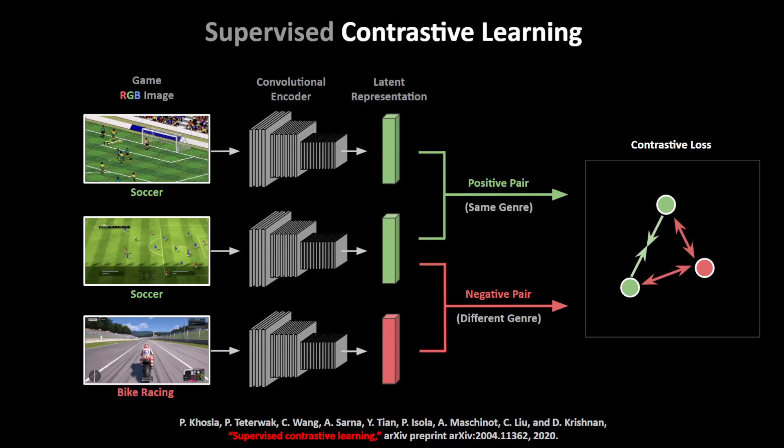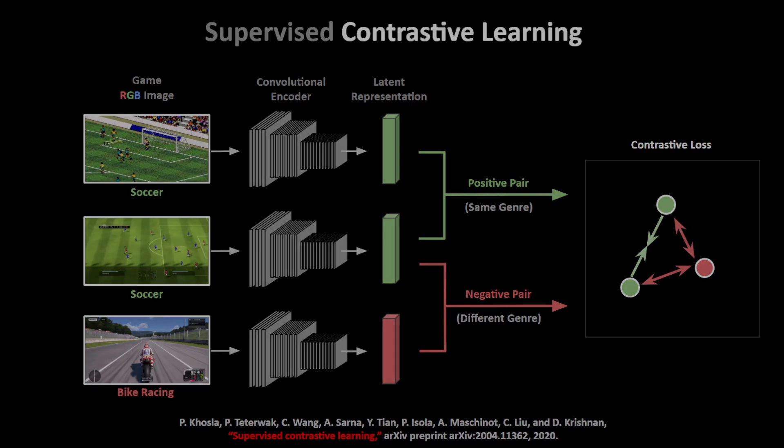This loss function forces our encoder to learn features that are common across all games of the same genre, and it learns to ignore the stylistic differences in their graphics. Such a loss function also leads to learning more general-purpose representations, because it does not train using something like action labels or reward functions that you commonly see in imitation or reinforcement learning frameworks.